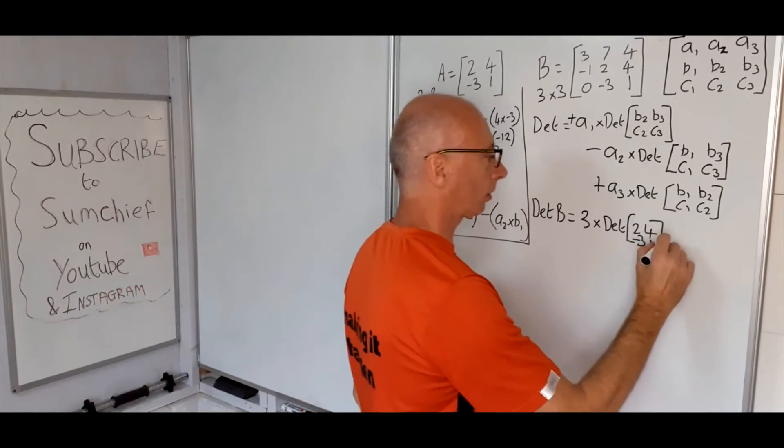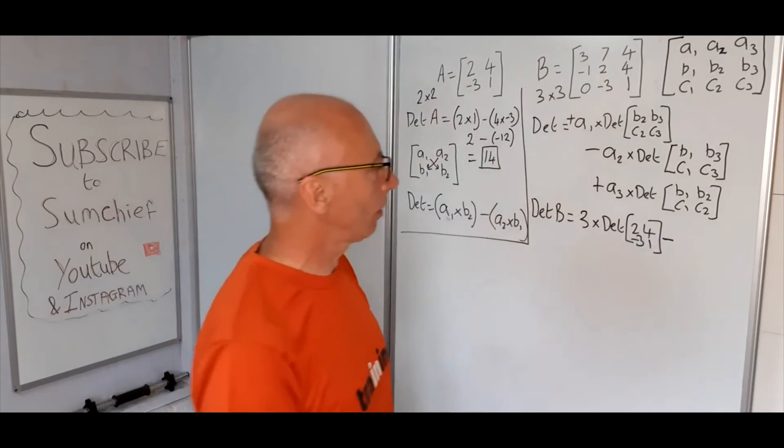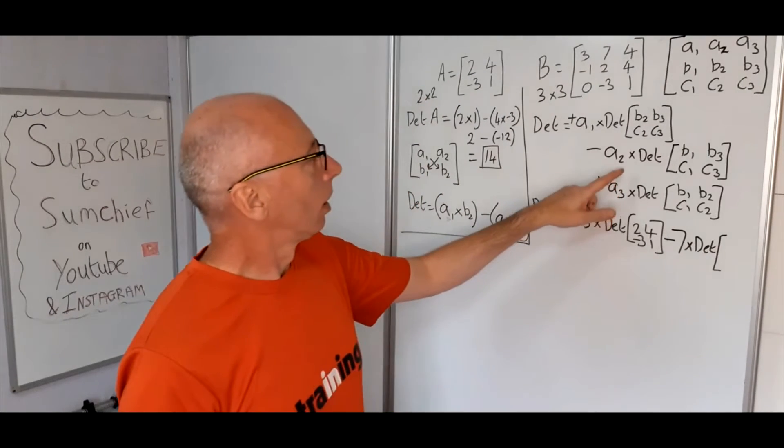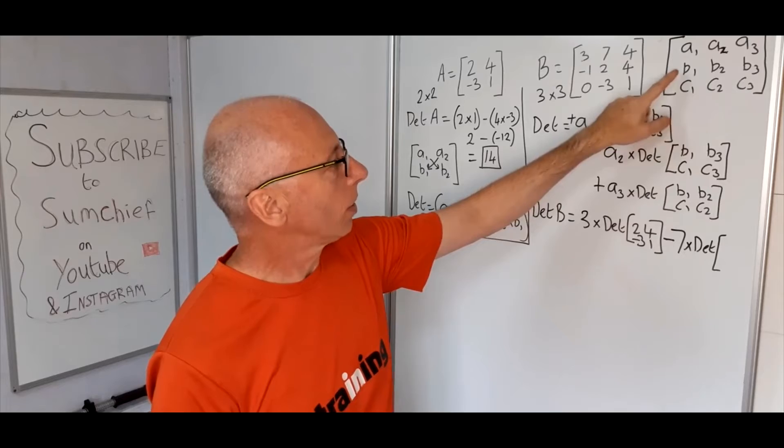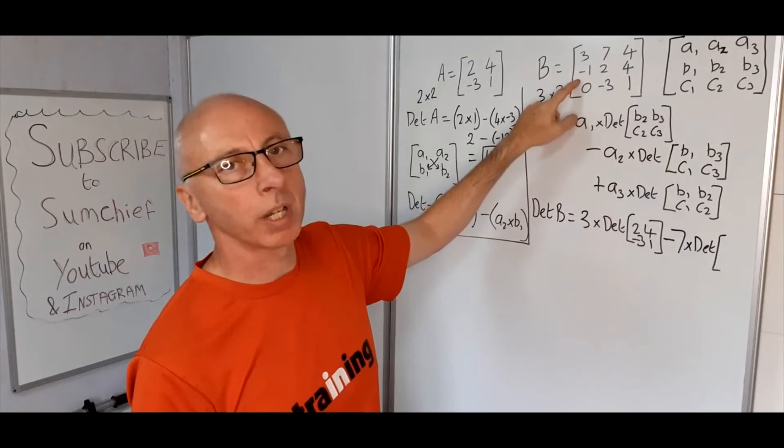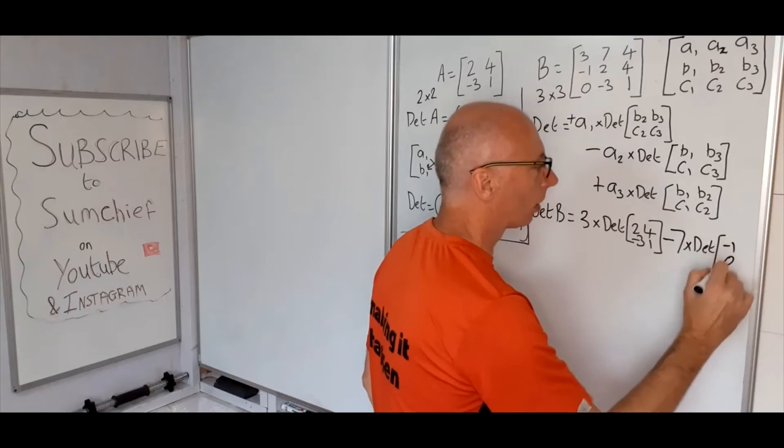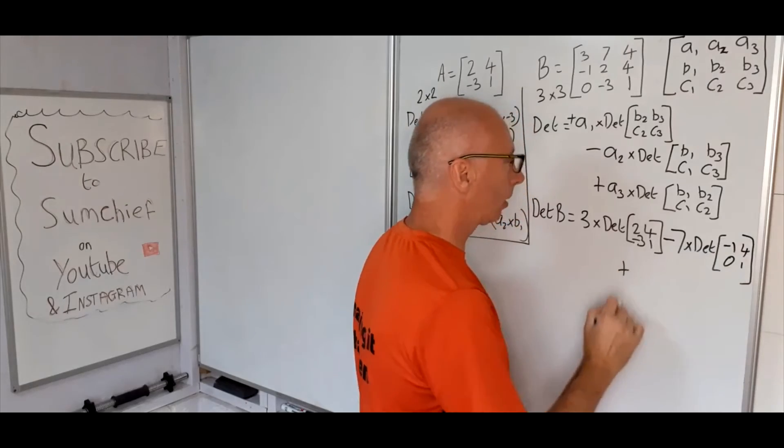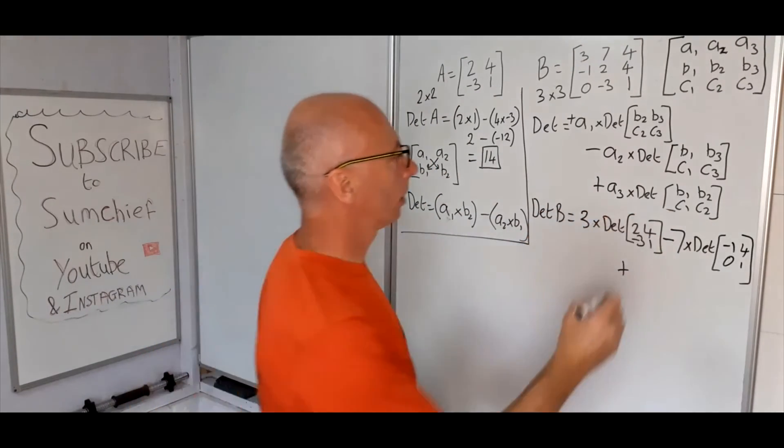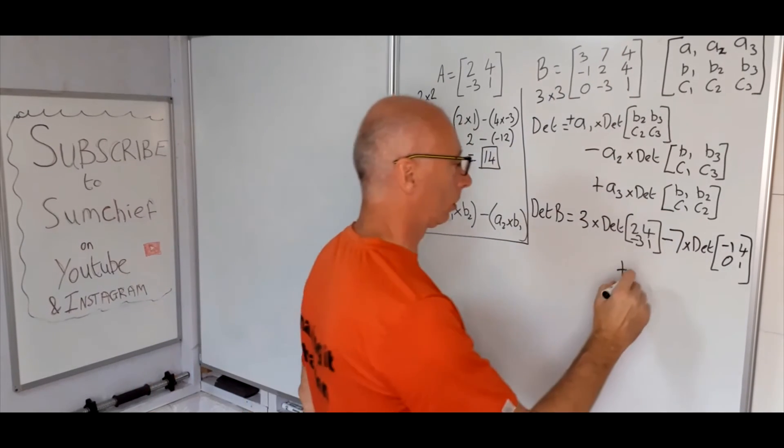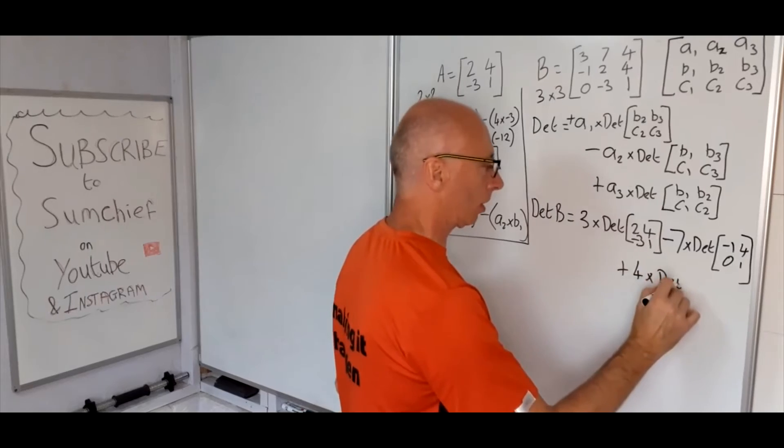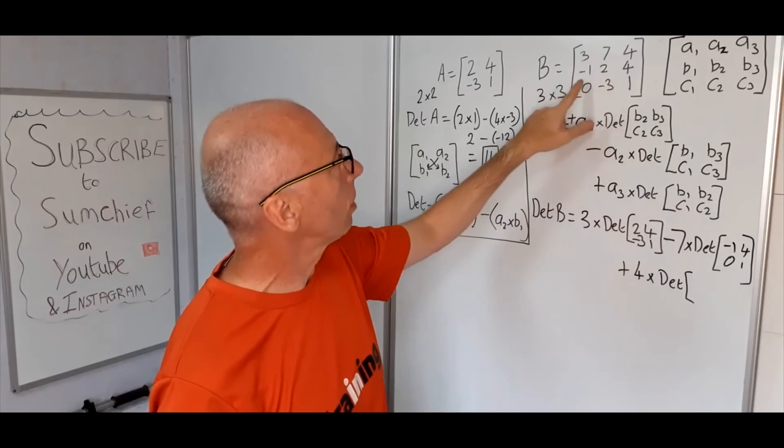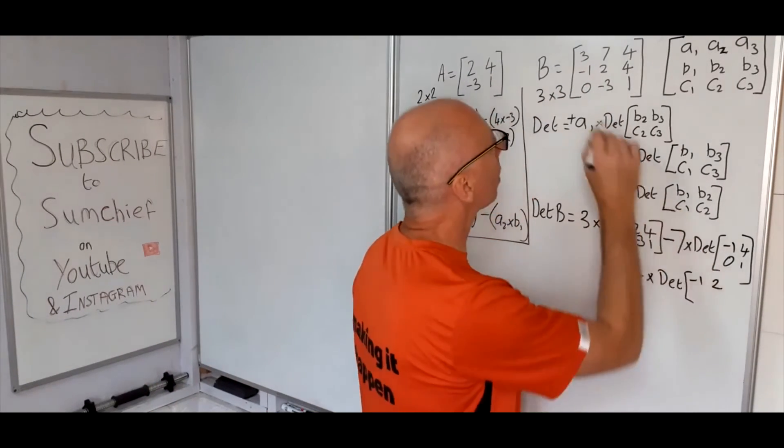Okay, now we subtract A2, which is 7, times the determinant of B1, B3, C1, C3, so these two and these two. So in this case, we've got minus 1 and 0, 4 and 1. And then we're going to add A3, A3 in this case is 4, times that by the determinant of this matrix here, B1, B2, C1, C2, so make the matrix out of this one. Minus 1, 2, 0, minus 3.